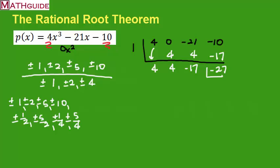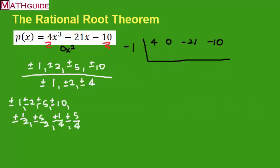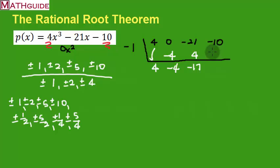So I'm going to try negative 1 and see if that works. I'm going to clear all this out and try it again with negative 1. Bring down the leading coefficient — that would be 4. Multiply, add, multiply, add, multiply, add. And it looks like here I get 7. Still not a 0. So it looks like the 1s just don't work — whether it's negative 1 or positive 1, they don't work.